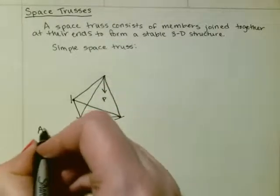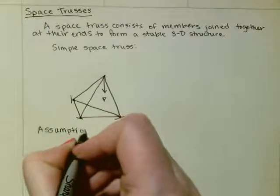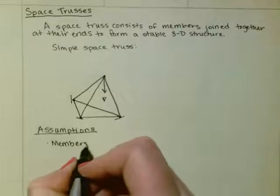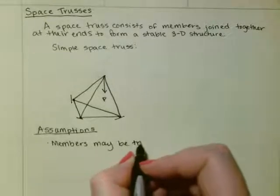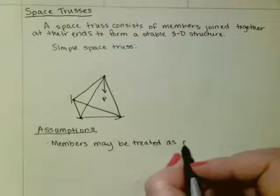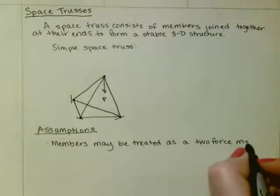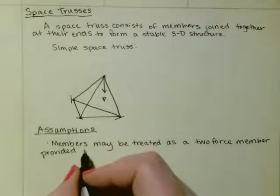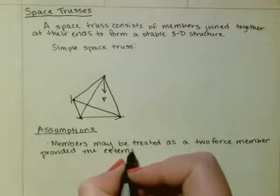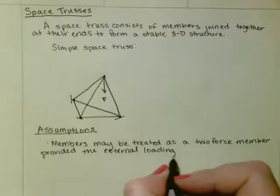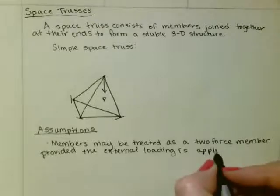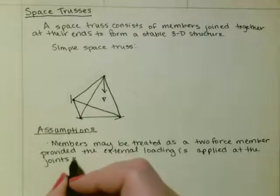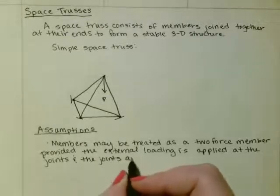When you're doing a space truss, you need to make assumptions. One assumption is members may be treated as a two-force member, provided the external loadings is applied at the joints, and the joints are ball and socket connections.